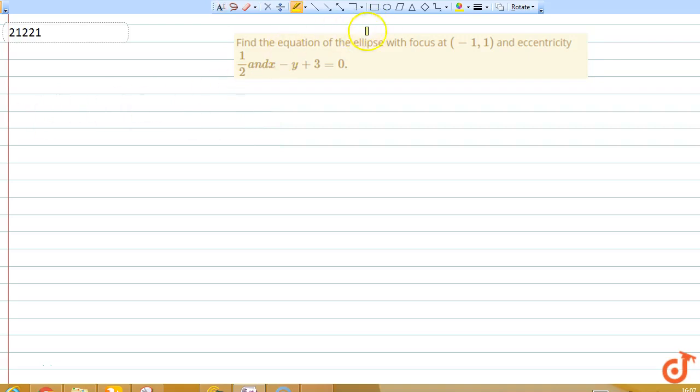In this question we have to find the equation of the ellipse with focus at (-1, 1), eccentricity e = 1/2, and equation of its directrix is x - y + 3 = 0.